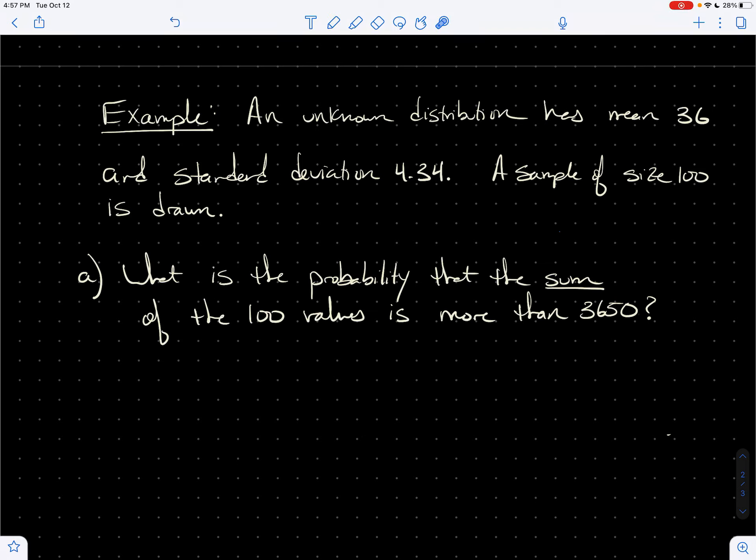Alright, so here's an example for you. We've got an unknown distribution with mean 36 and standard deviation 4.34. So let's just to the side write, the mean of the original distribution is 36, and the standard deviation of the original is 4.34.